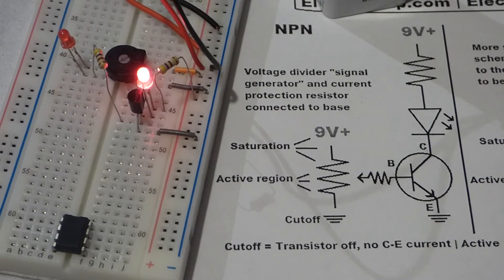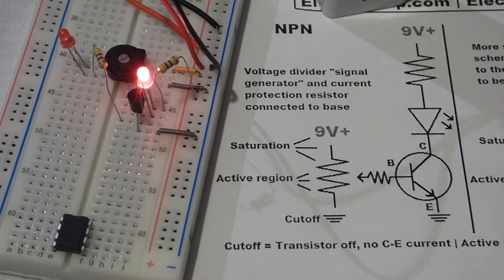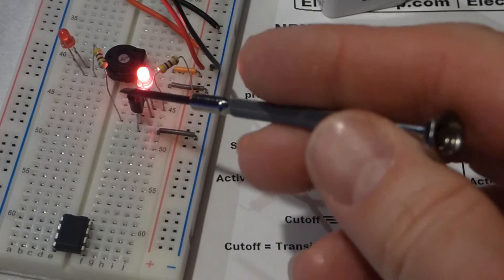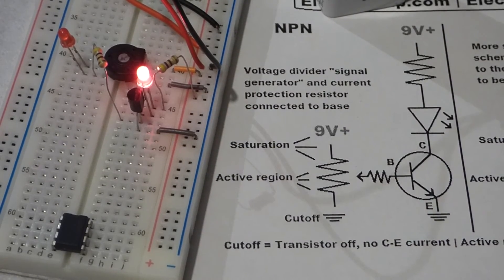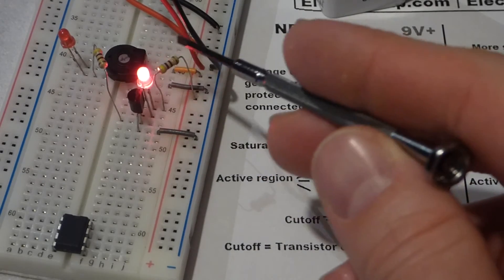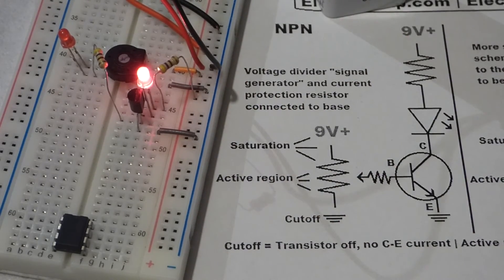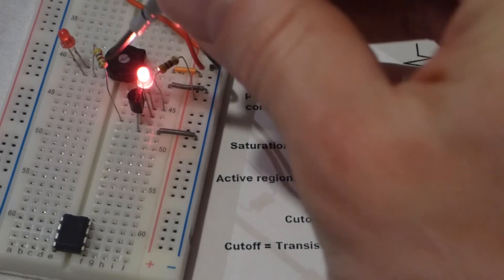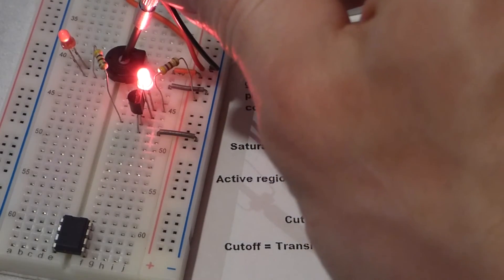So if you gave the base one milliamp, that would allow a hundred milliamps through the collector and no more. If you let two milliamps to the base, then 200 milliamps could flow from the collector to the emitter. That's the gain or the beta value—it tells you how much more current flows through the collector versus the current you're sending to the base.